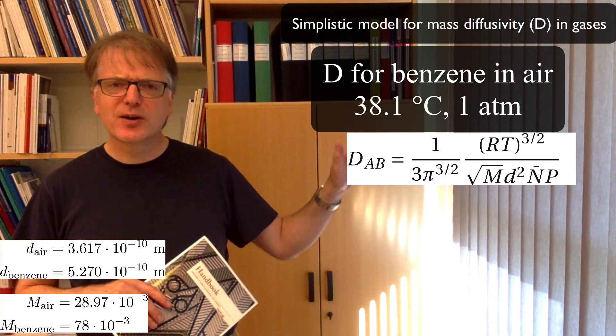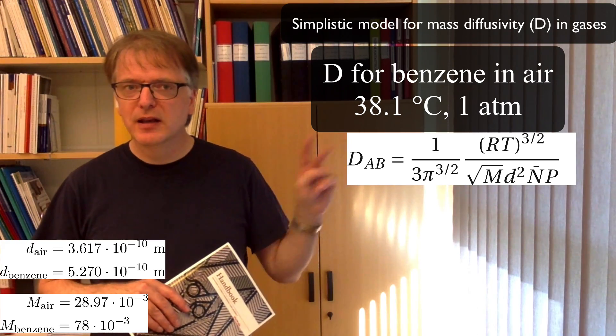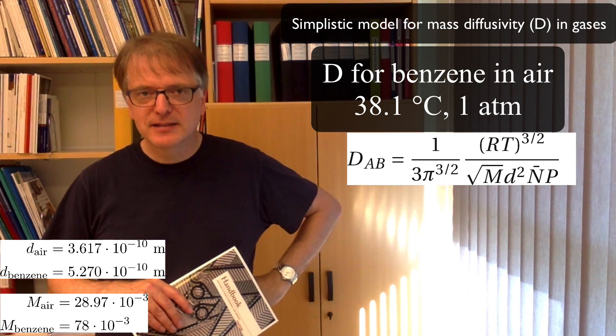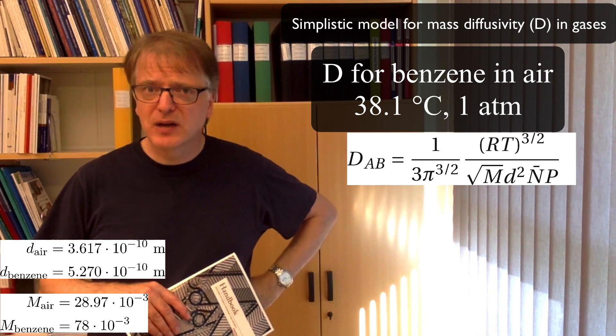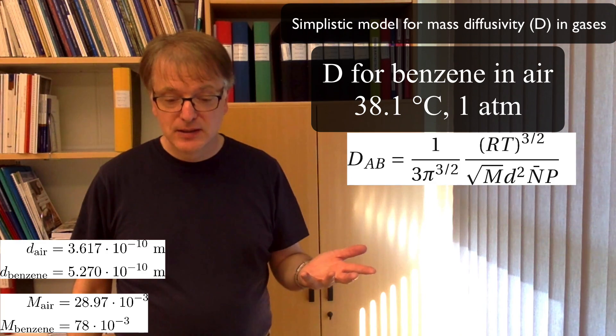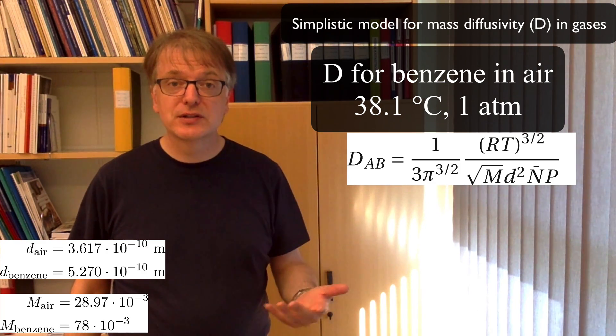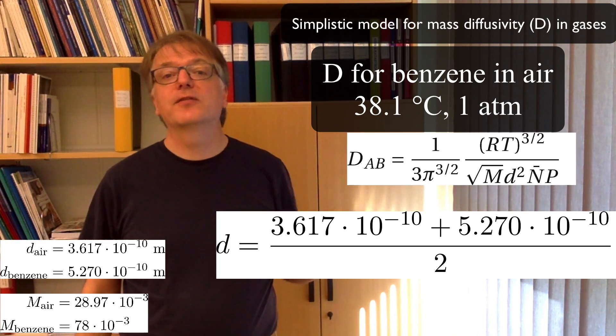But I had this equation here and it's only one molecular weight and only one molecular size. One M and one D. And I have two substances. How to deal with that? Well, for the molecular size, you simply take normal average. So the size one plus the size of the other and divided by two.